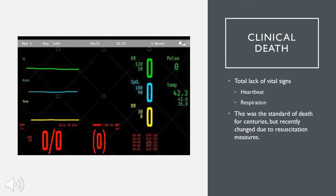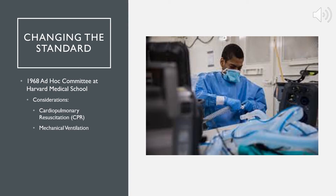Let's begin by discussing clinical death. Clinical death is generally described as the lack of vital signs caused by an inability to maintain circulatory and respiratory function. For hundreds of years, this lack of a heartbeat and breathing was the standard for determining death in an individual. However, in 1968, a committee at Harvard Medical School determined that there should be another way of determining death due to increased medical interventions.